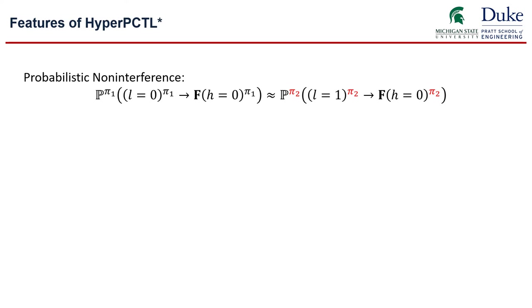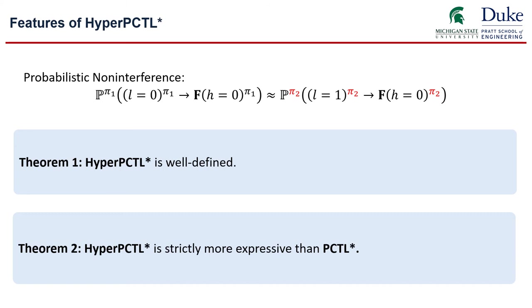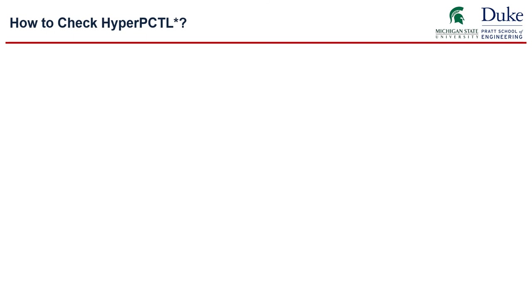Using this new logic, hyper PCTL star, now we can formally express the probabilistic non-interference property using temporal logic like this. Beyond that, we prove that hyper PCTL star is actually well defined, meaning that even though we made the syntactic extension, the semantics of the logic is still well defined. Our second theorem shows that hyper PCTL star is strictly more expressive than PCTL star, showing that there is indeed a need for this new, more expressive logic.